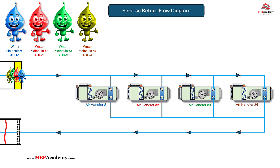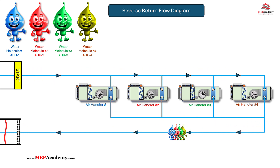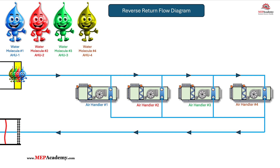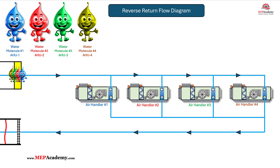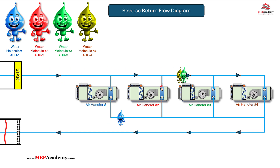With the direct return piping layout, the water returns to the source much quicker than with the reverse return piping layout. The reverse return piping distance for the water to travel is much longer than the direct return method.